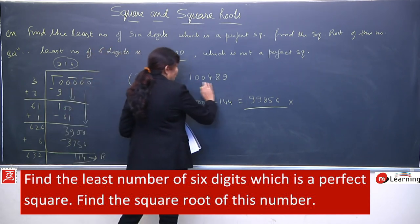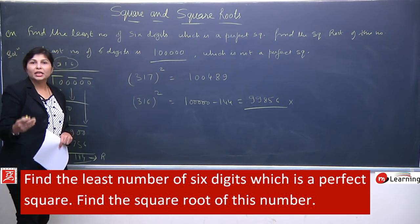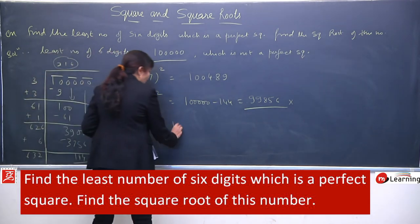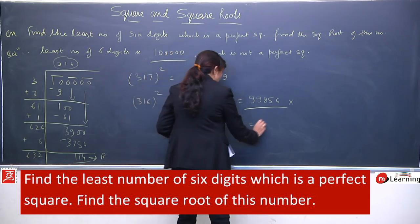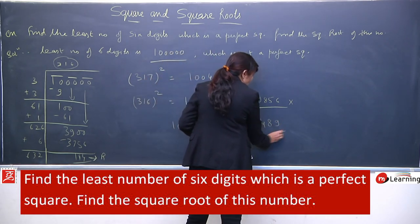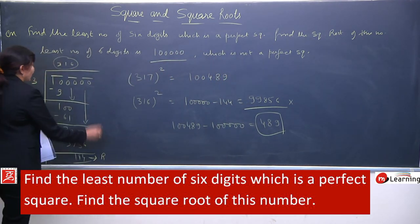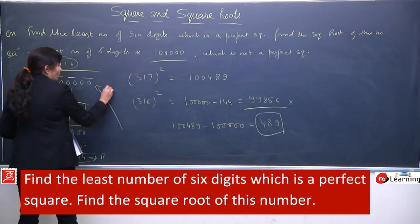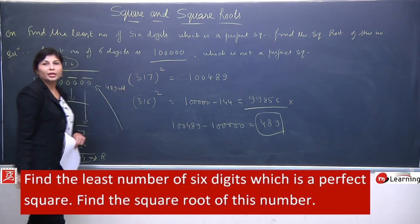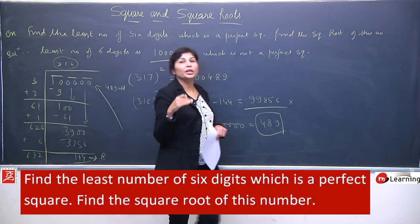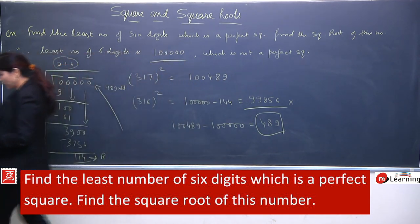Ab humara number hai 100000 (one lakh). Actual number jo add karna hoga: 100489 − 100000 = 489. So 489 is the required number to be added. Tab yeh perfect square bnega — woh bhi six digit ka. 316² = 99856 — but yeh five digit mein convert ho jata, isliye consider nahi karna.